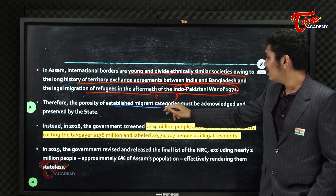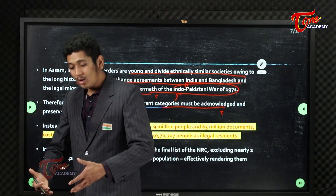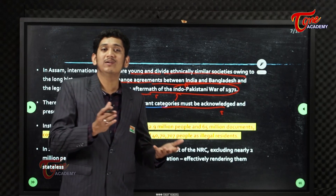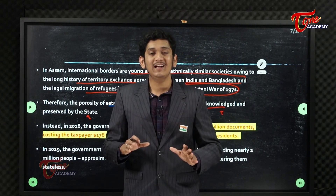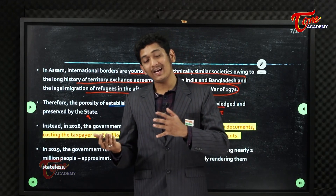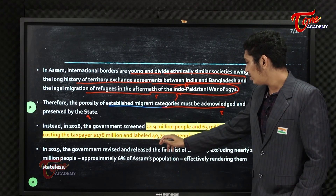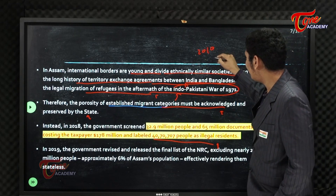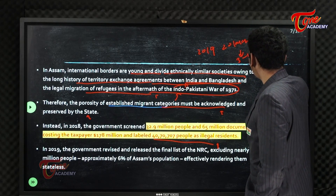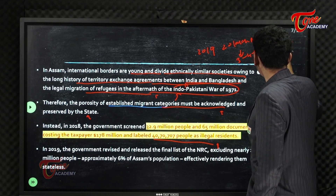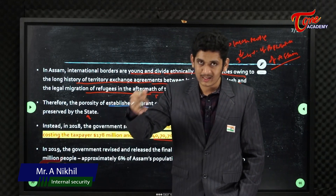The porosity of the border means established migrant categories must be acknowledged and preserved by the state. Though these are migrant people, they will become stateless when declared illegal immigrants, because most of them — if they are of a young age like 24, 25 or in their early 30s — cannot be sent back even to Bangladesh. When the first draft of NRC was published, it contained around 40 lakh people. When it was revised in 2019, it contained around 20 lakh people — approximately 3 to 4 percent of the population of Assam. It is hard to detect from where each person has originally come.